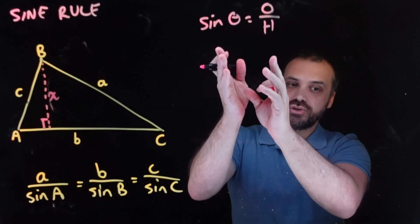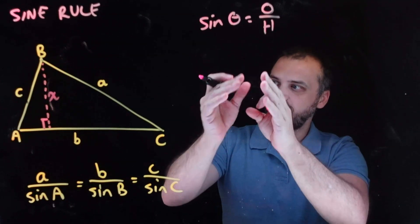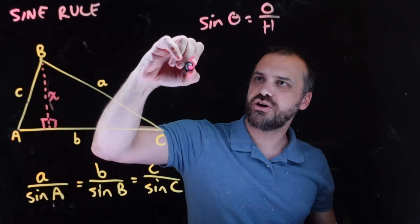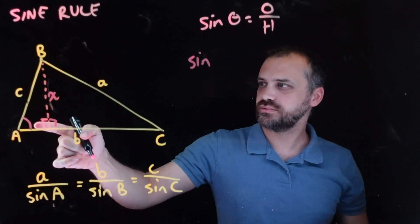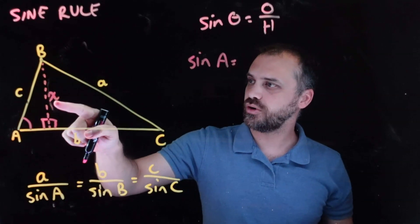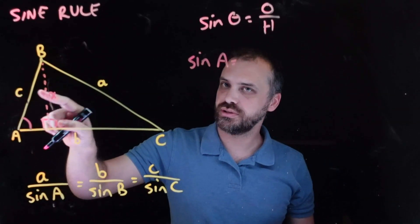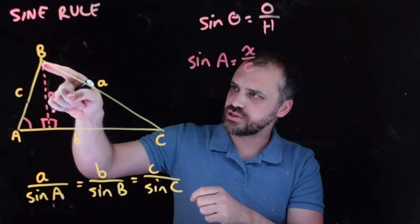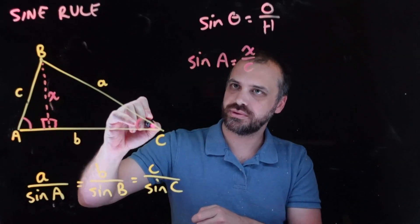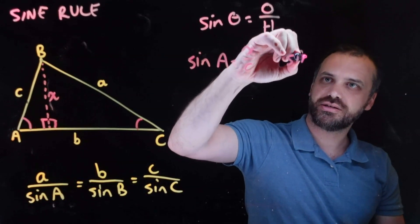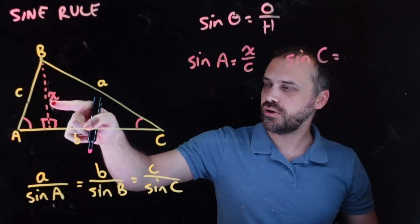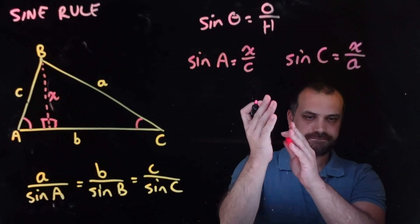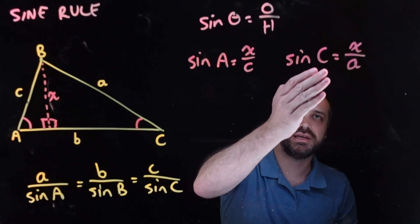We're going to use the fact that sine theta equals opposite over hypotenuse with the two right-angle triangles we've constructed. For the left triangle: sine A equals opposite over hypotenuse, which is x over c. For the right triangle: sine C equals opposite over hypotenuse, which is x over a.